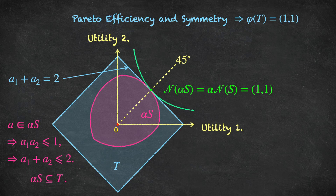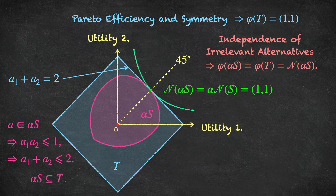Why is this useful to know? Remember the axiom of independence of irrelevant alternatives. We know that phi chooses the point (1, 1) in the large symmetric game T. We also know that alpha*S is contained within T and contains the point (1, 1). So all the prerequisites are met for the independence of irrelevant alternatives axiom to apply, and phi will choose the same point for the game alpha*S that it does for T — namely, (1, 1).